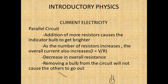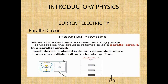As you add additional resistors, the overall resistance decreases. When all devices are connected using parallel connections, the circuit is referred to as a parallel circuit. Each device is placed in its own separate branch, and there are multiple pathways for charge to flow — as opposed to a series circuit where there's just one pathway.